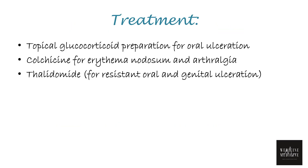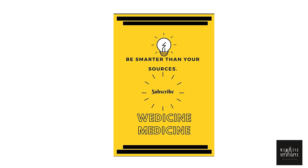Treatment of Behcet's disease is directed towards immune suppression. Topical glucocorticoid preparations can be used for oral ulceration. Similarly, colchicine can be used for erythema nodosum and arthralgia. Thalidomide is also used for resistant orogenital ulcers in Behcet's disease. Though its exact mechanism of action is largely unknown, it is believed that thalidomide decreases neutrophil chemotactic action and cell-mediated immunity. Thank you for watching this video.